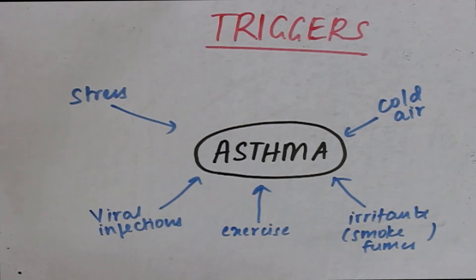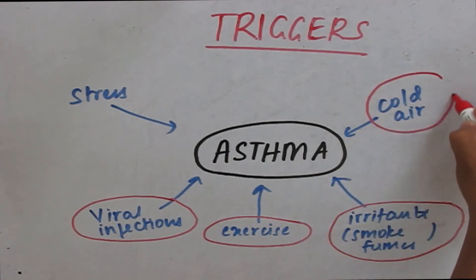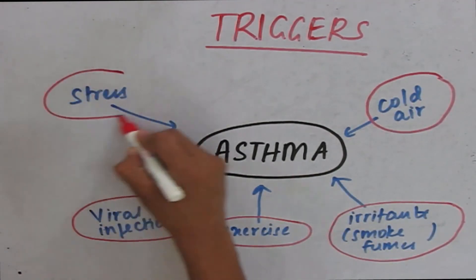now I will tell you the factors which can trigger asthma or triggers. Viral infections of the respiratory tract can be a potent trigger, exercise can trigger asthma, irritants such as smokes and fumes can trigger asthma, cold air can be a cause, and stress is the usual cause of asthma nowadays.